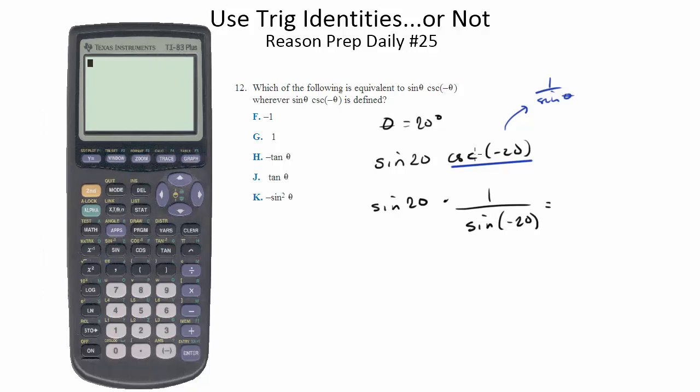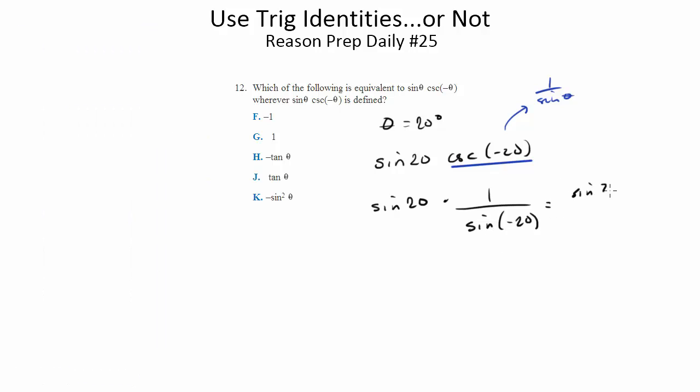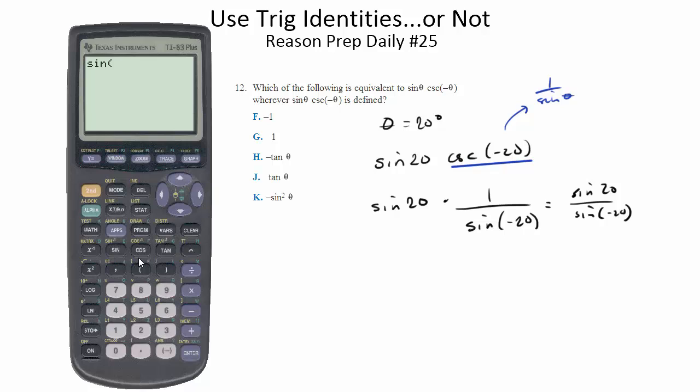This, incidentally, is the same thing as, just as a shortcut, the sine of 20 over the sine of negative 20. So we'll just figure that out, see what we get. So sine of 20 divided by sine of negative 20.